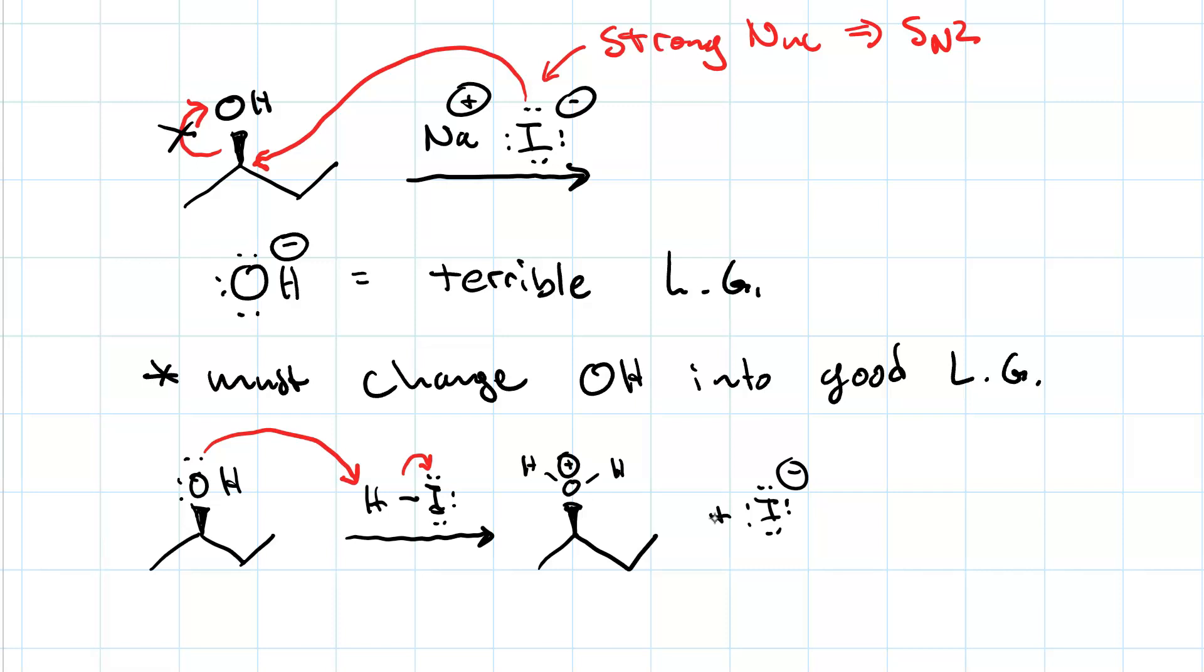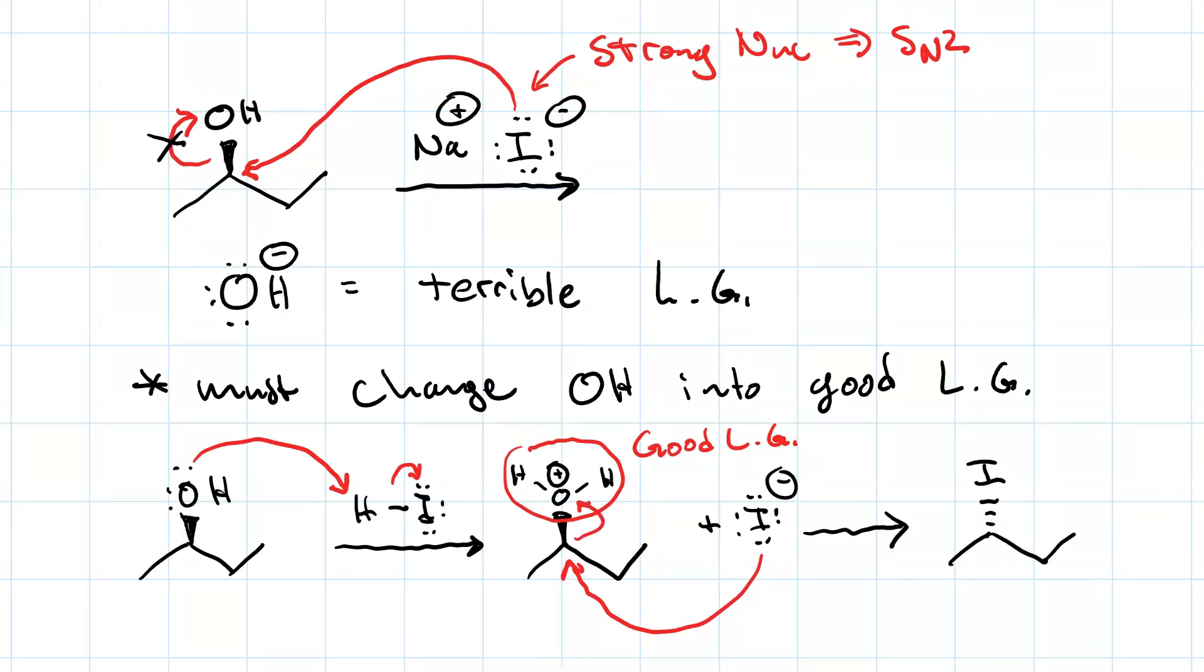Now, instead of a hydroxide, I've got a water, which is a good leaving group. So now I can do SN2 attack. I get my SN2 product, the alkyl iodide with inversion of configuration, and I also get water. That's my leaving group.